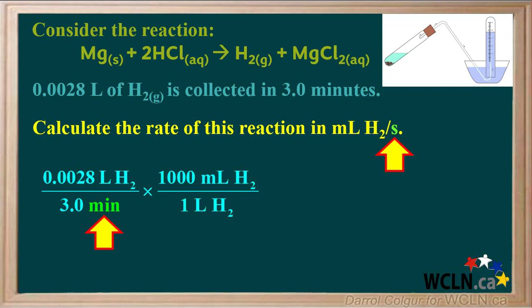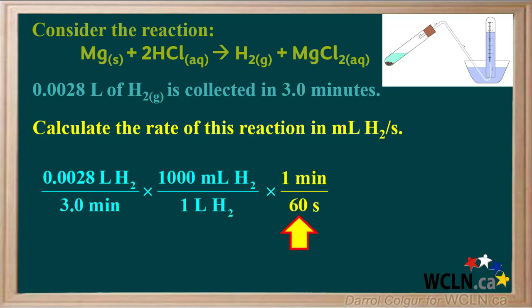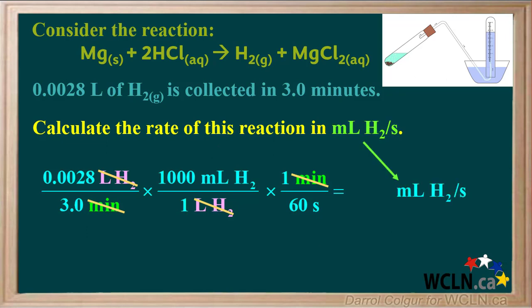We see that they want the rate in milliliters of hydrogen per second. At this point, our time unit is minutes, so we need to change minutes on the bottom to seconds on the bottom. We can accomplish this by multiplying by a conversion factor with minutes on the top and seconds on the bottom. The minutes will cancel and we'll be left with seconds on the bottom. We know that one minute is equal to 60 seconds, so we'll put these numbers in. Now we see that both liters of hydrogen and minutes can be canceled, leaving us with milliliters of hydrogen per second, which is the unit they wanted.